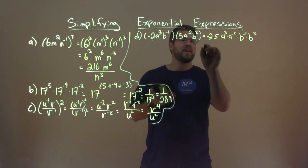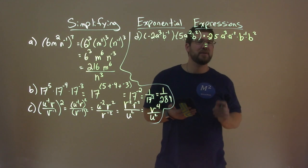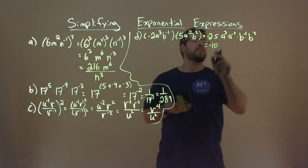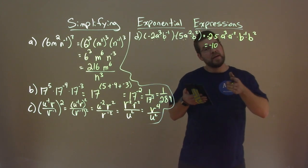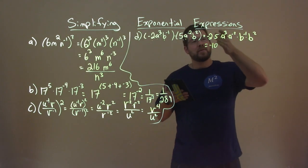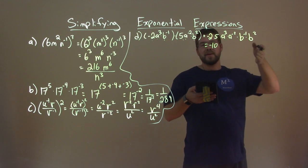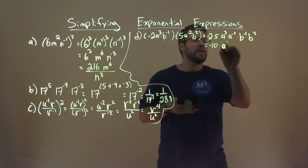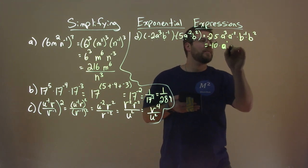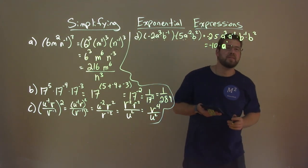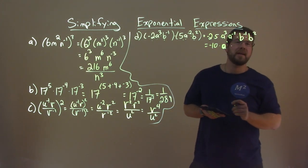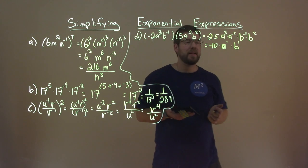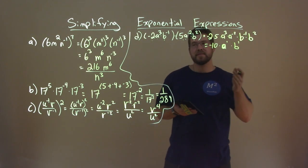So let's simplify. Negative 2 times 5 is negative 10. a to the third times a to the negative 2 — remember, multiplication, add the exponents — 3 plus negative 2 is positive 1, so we have a to the positive 1. Same thing with b — add the exponents — negative 1 plus 2 is positive 1, so we have b to the first. That's it: negative 10 times a times b.